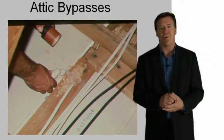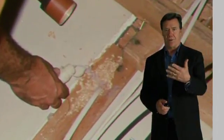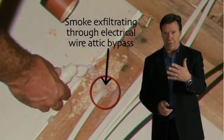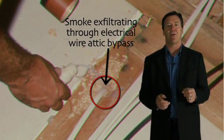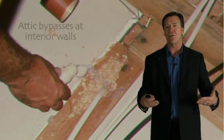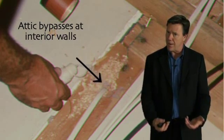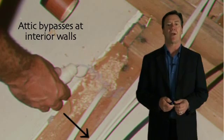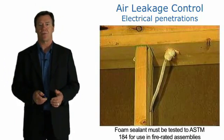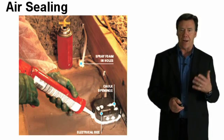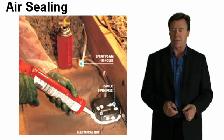Here you can see an attic bypass — a significant amount of air can infiltrate or exfiltrate not only where wiring is located, but also up in attics where interior walls have drywall. We definitely want to seal all these penetrations, and that can be done a variety of ways. Spray foam is one option; caulks and sealants are another. We want to make sure they're resilient enough to expand and contract with the building envelope.